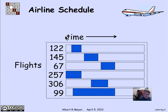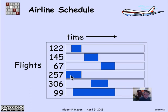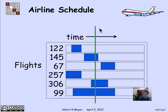Let's look at a sample schedule. There are six flights here numbered 122, 145 through 99. The horizontal bar represents times during the day. This blue block indicates that flight 122 is on the ground from 3 AM to 7 AM. Flight 145 is on the ground at a completely disjoint time interval. Flight 257 is on the ground from midnight until about 6 AM, and it does overlap with 122. If you think of a vertical green line sliding across the bar, the maximum number of blue intervals it ever crosses is three — meaning we can get by with three gates.